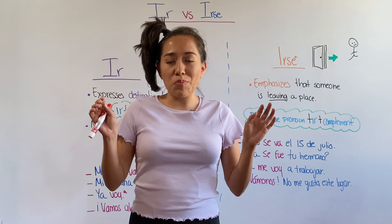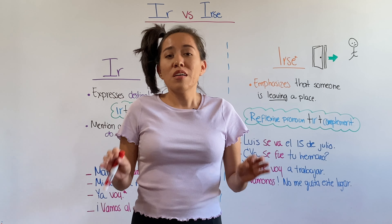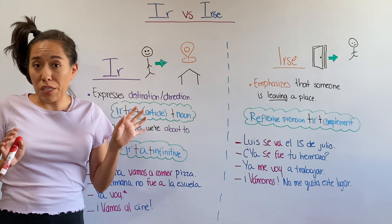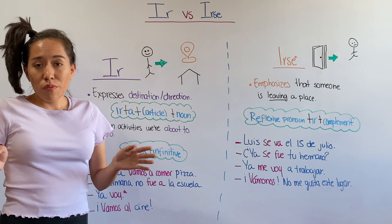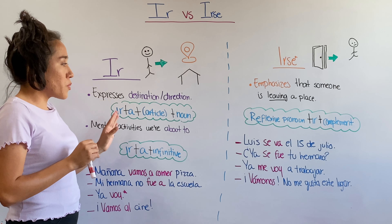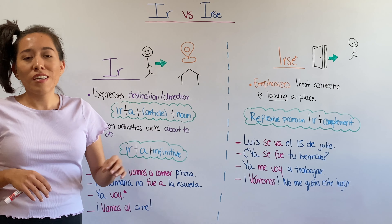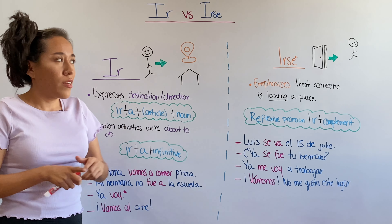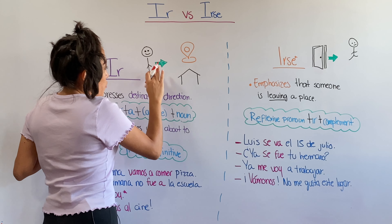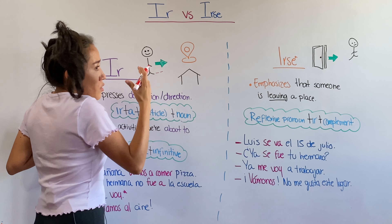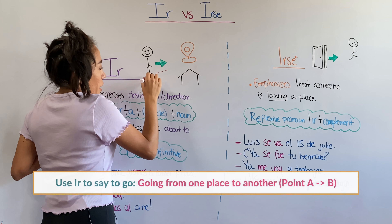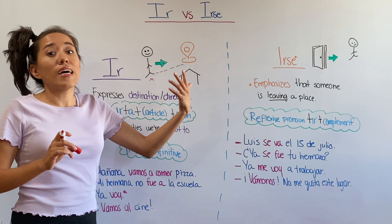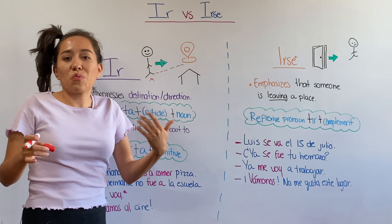IR and IRSE are super important in Spanish — you cannot ignore them. Let's start with IR. IR means 'to go,' which means you are going to use it to express destination or direction. In human words, that means you are going to use IR to say that you're going somewhere. As this drawing shows, when I use IR, I'm saying I'm going from point A to point B. To do that, you're going to use IR plus A plus a noun, and that noun is the place where you're going.